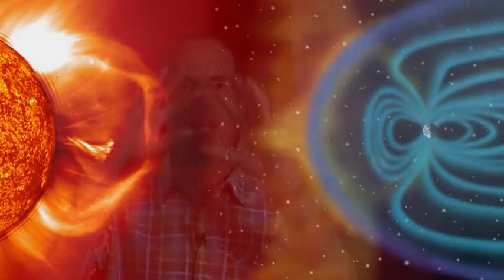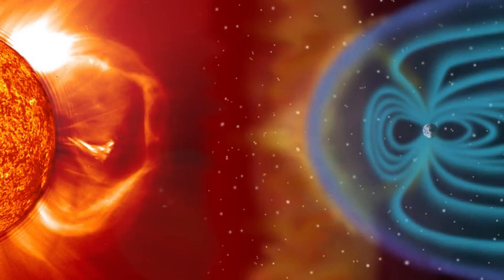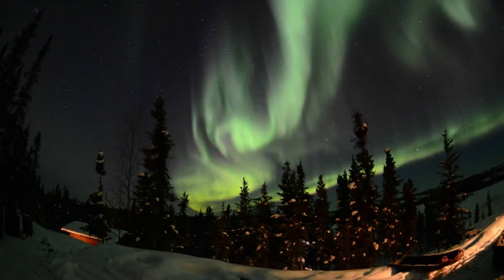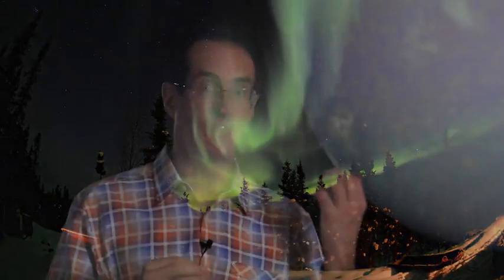So the part of the solar wind that goes through space and gets close to the earth is actually then deflected by our magnetic field and it comes down on the earth near the north and south poles. One result of the solar wind is the beautiful aurora or northern and southern lights. And we realize now that the source of the northern lights is the solar wind.